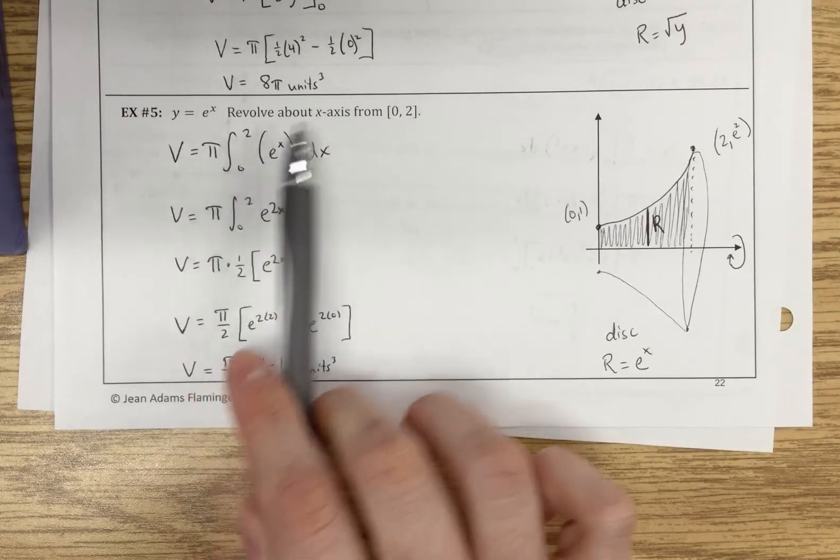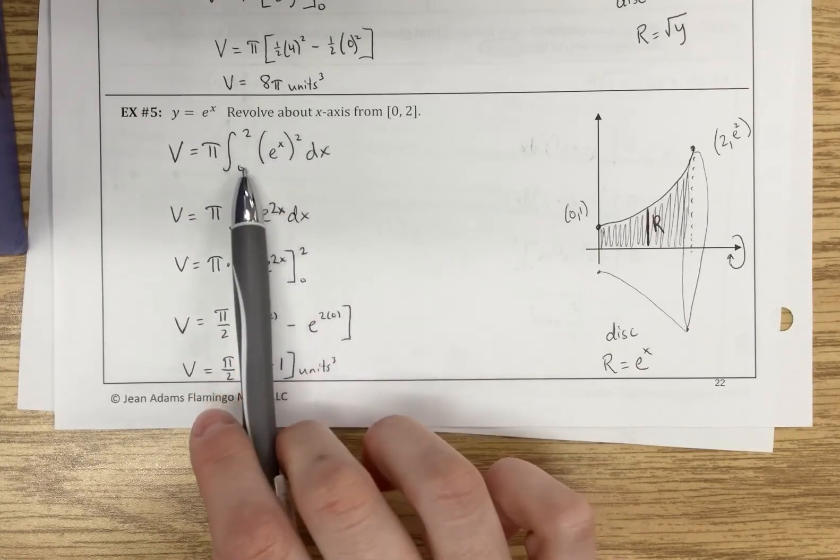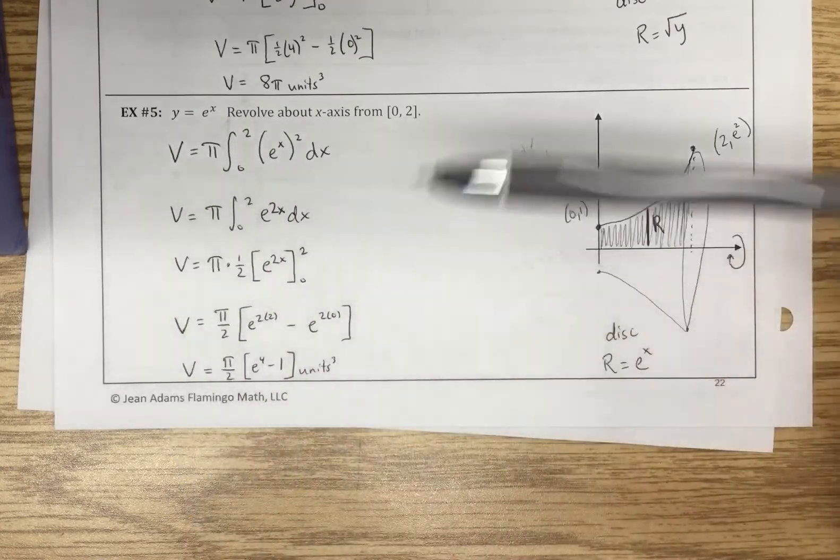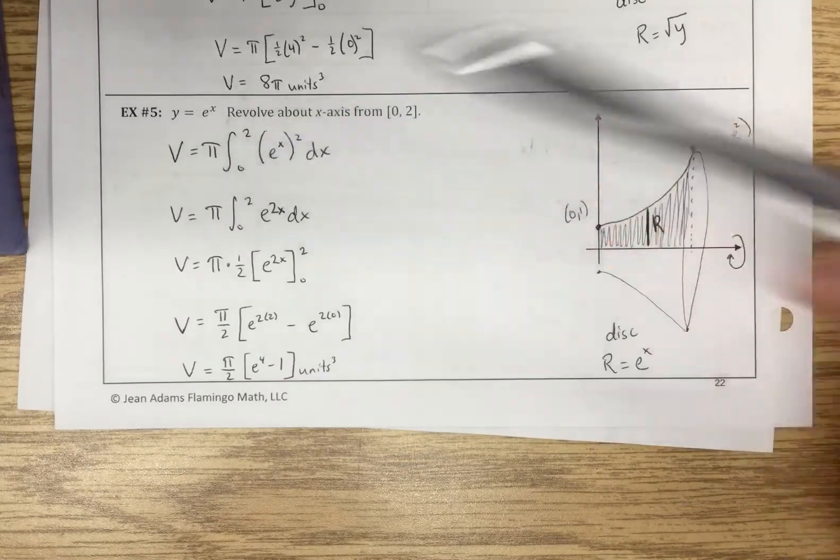Since we're talking about doing this with the x-axis, our points, our bounds are with respect to x, and we end up with 0 to 2.